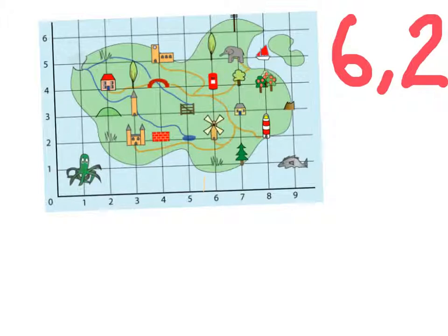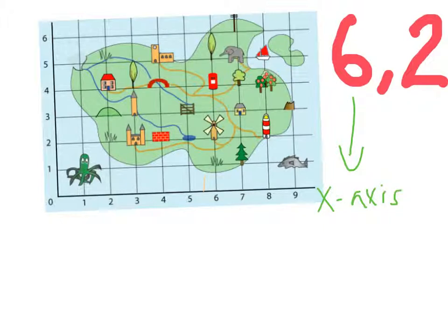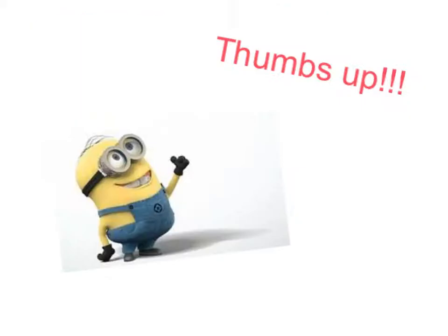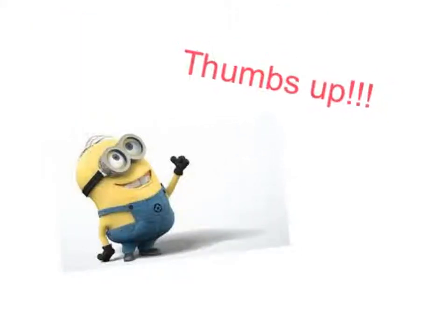So remember, when we're giving coordinates, writing coordinates, or reading them, the first coordinate we write is the x-axis, and the second one we write after the comma is the y-axis. Great learning today, guys! Well done — give yourself a big thumbs up.